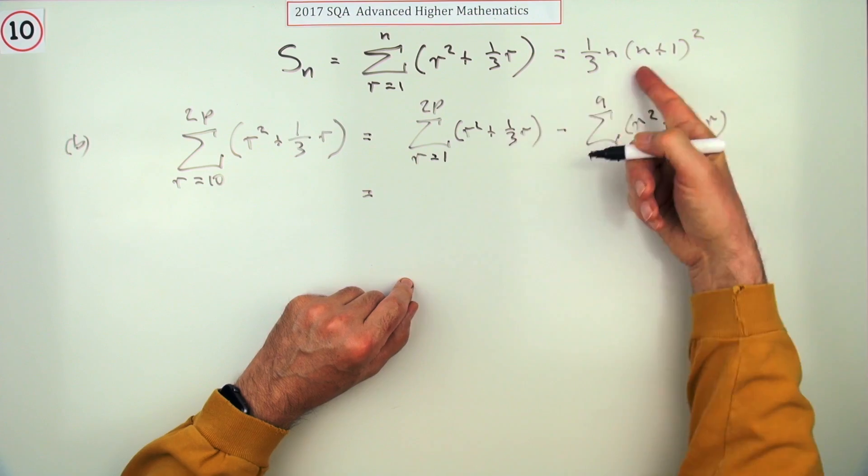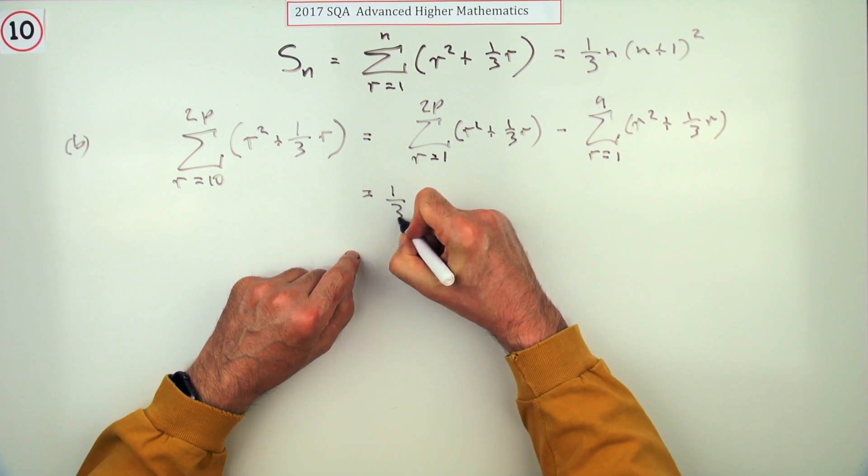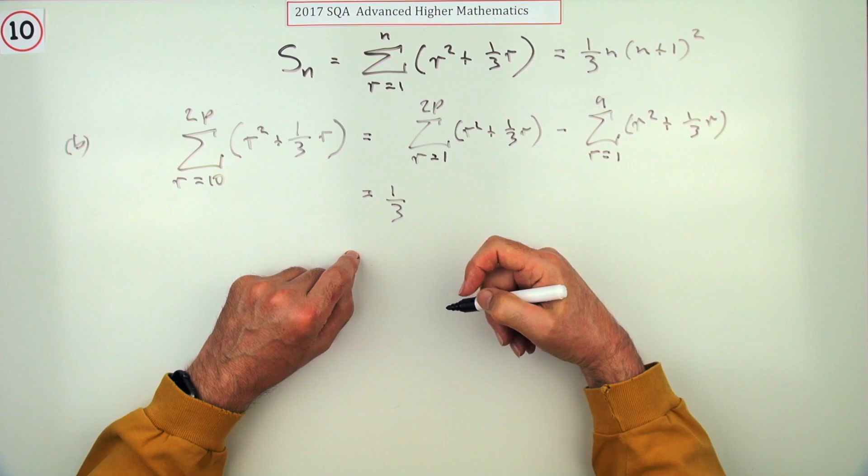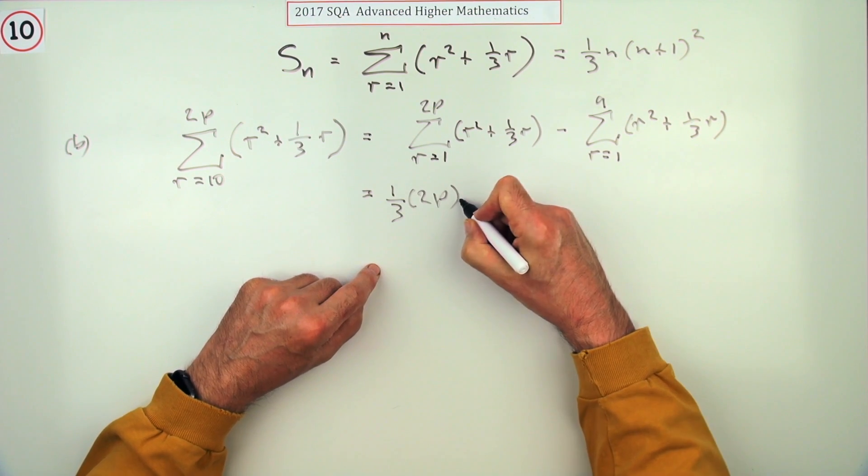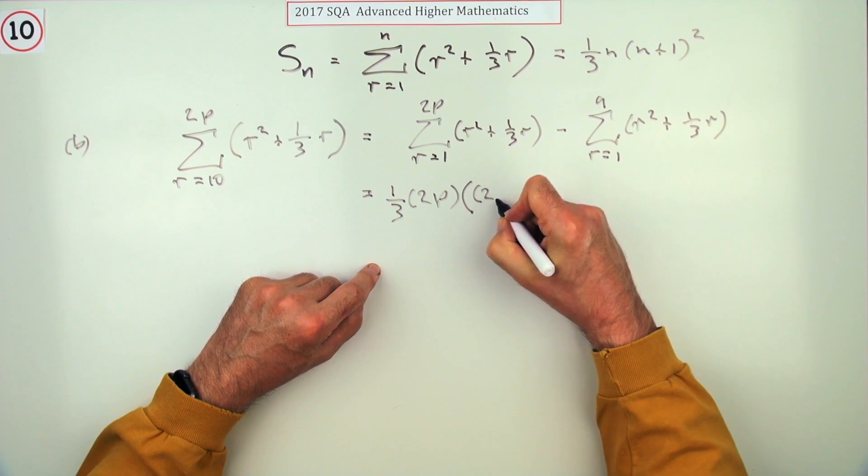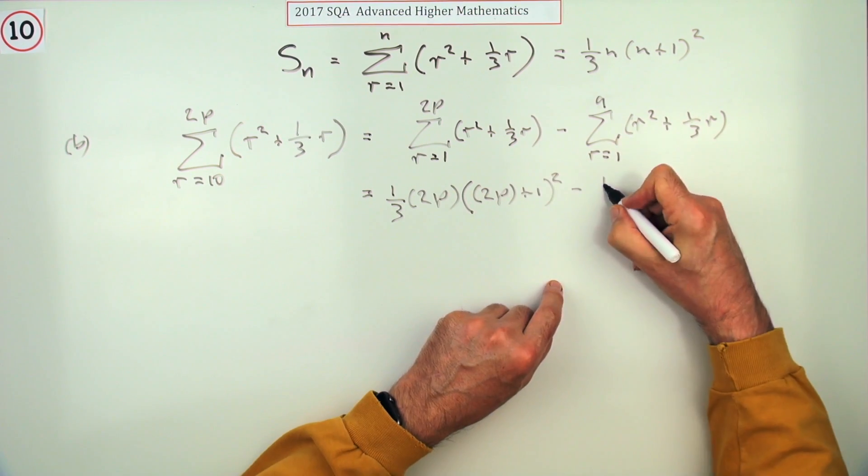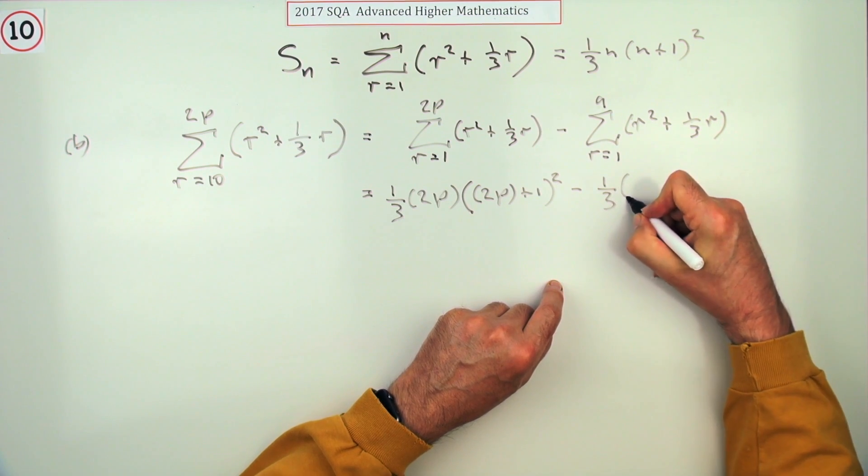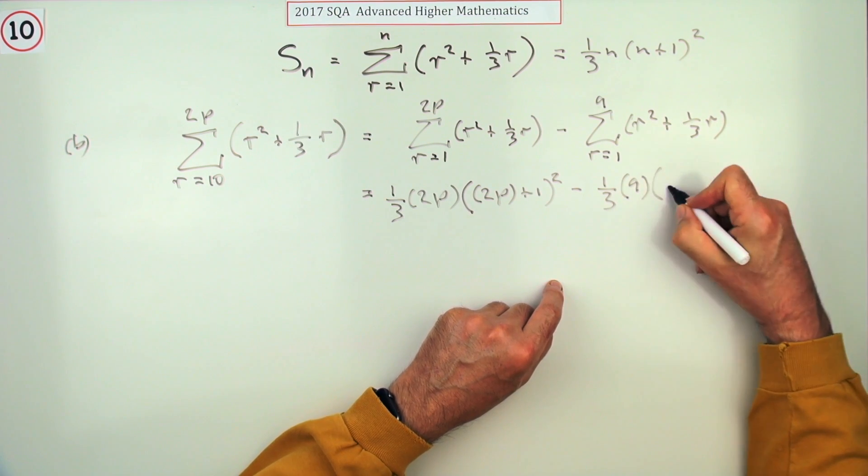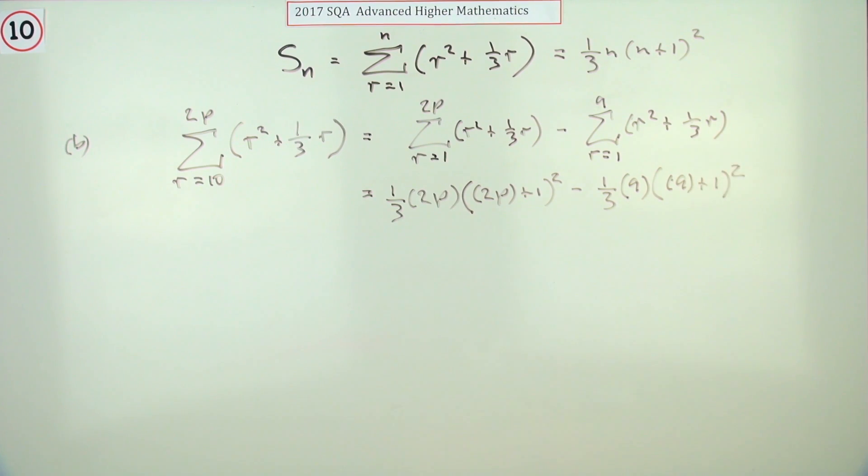There's only two marks for this. I've got to feed both of them into this. That first one's going to be a third of all the n's replaced by 2p, so a third of 2p times—that's 2p plus one squared—minus a third of, this time it's a nine that's going in, so it's a third of nine times nine plus one squared.